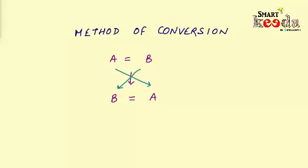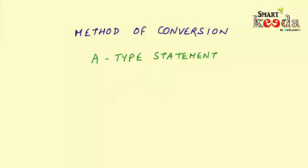This method is termed the method of conversion, and by using this method you can save a lot of crucial time during an exam. Let's discuss the different kinds of statements and their conclusions using the method of conversion. The first type is an A-type statement, the example of which is: all boys are girls.